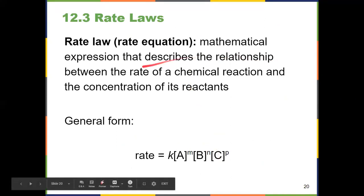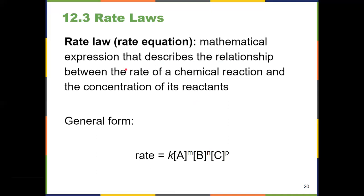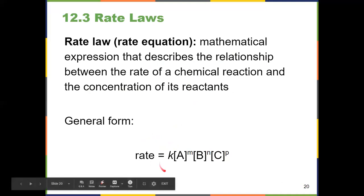A rate law describes the relationship between the rate of a chemical reaction — how fast it's going — and the concentration of the reactants. We saw in video one that concentration is important, but a rate law tells me how the concentration of each one is important, because they're not all created equally. They all follow the same general form: rate is equal to K, the rate constant.